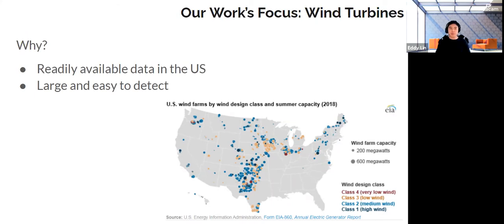Our focus in our work has been centered around wind turbines mostly for two reasons. One is because we have readily available data in the U.S. and they're pretty large, so it's pretty easy for object detection models to detect them. We might have started with the transmission towers that Jose just showed, and of course, with our goal to expand access to energy planning in other regions with not as much infrastructure, we might focus on solar panels in the future.